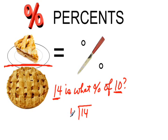14 divided by 10. 10 goes into 14 once, and 10 goes into 40 four times, 1.4.